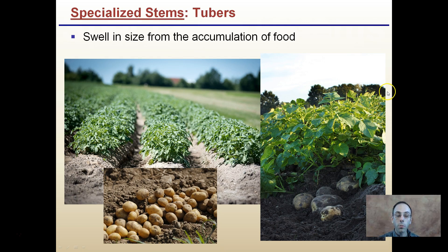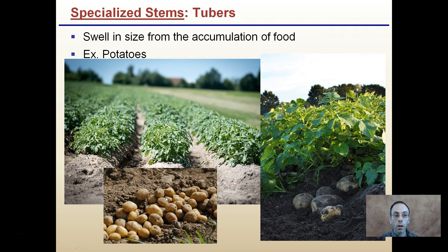Another type of specialized stem is tubers. They swell in size from the accumulation of food. Probably the most notable example would be potatoes. This is what potato plants look like above ground. We're referring to the tubers, which are these swollen areas that accumulate food located below ground. This shows the potato plant above ground, and these are the tubers below ground.